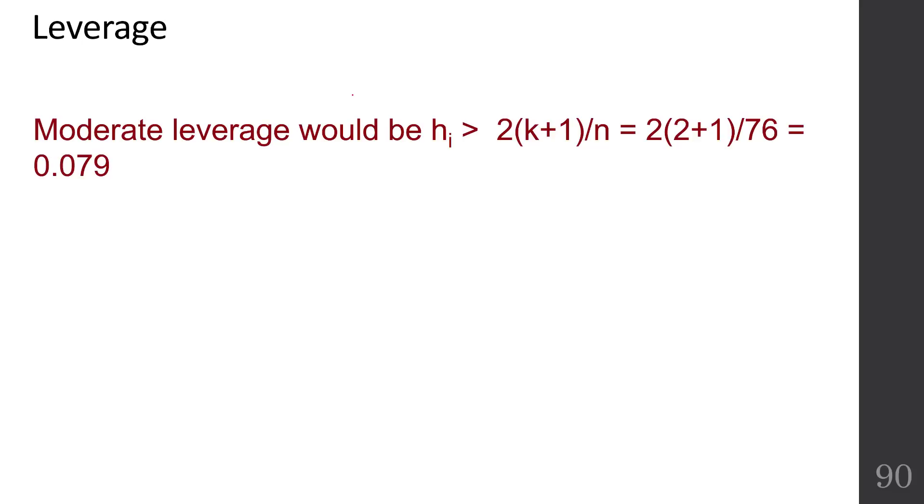So let's compute what a moderate leverage would be. According to our formula, two times the number of predictors plus one, which is two times two predictors - height and drop - plus one divided by 76 ends up being 0.079. And then high leverage would be that same calculation with a three here instead of a two, and that gives us 0.118.